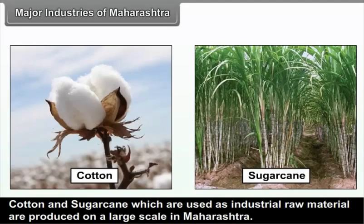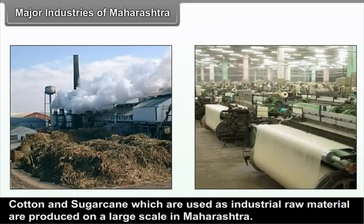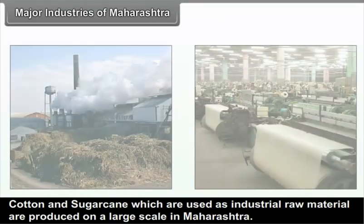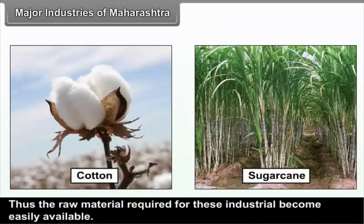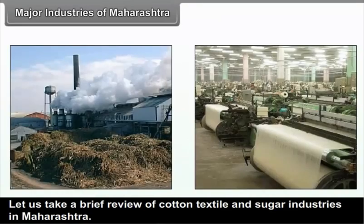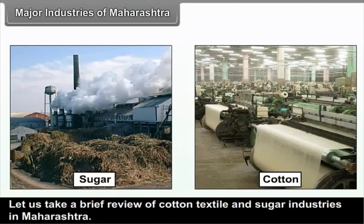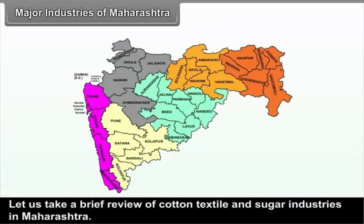Cotton and sugarcane, which are used as industrial raw materials, are produced on a large scale in Maharashtra. Thus, the raw material required for these industries becomes easily available. Let us take a brief review of cotton textile and sugar industries in Maharashtra.